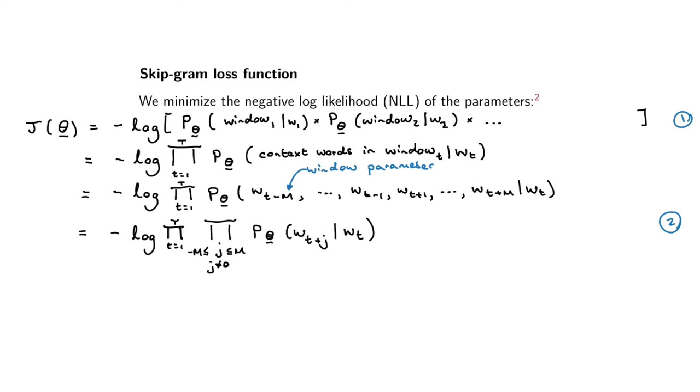The magical thing about logs of products is that we can take the log inside, and that makes optimization much easier. We've got the negative, then the sum from little t one to T, because the log of a product becomes the sum of the logs.